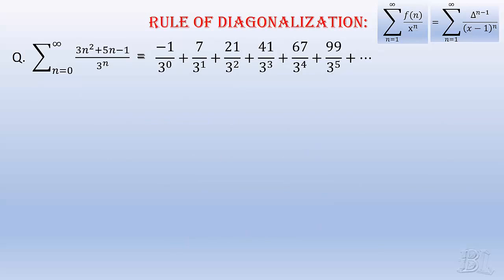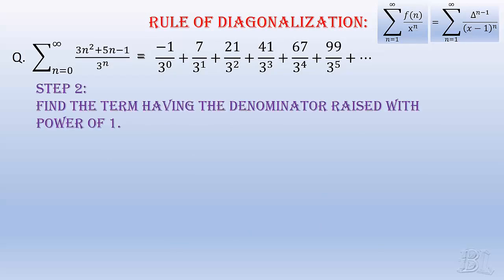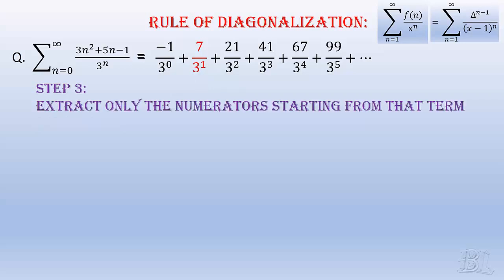In second step, we find the term having the denominator raised with the power 1, that is, the term shown by the arrow. Then, we extract only the numerators starting from that term as shaded here.